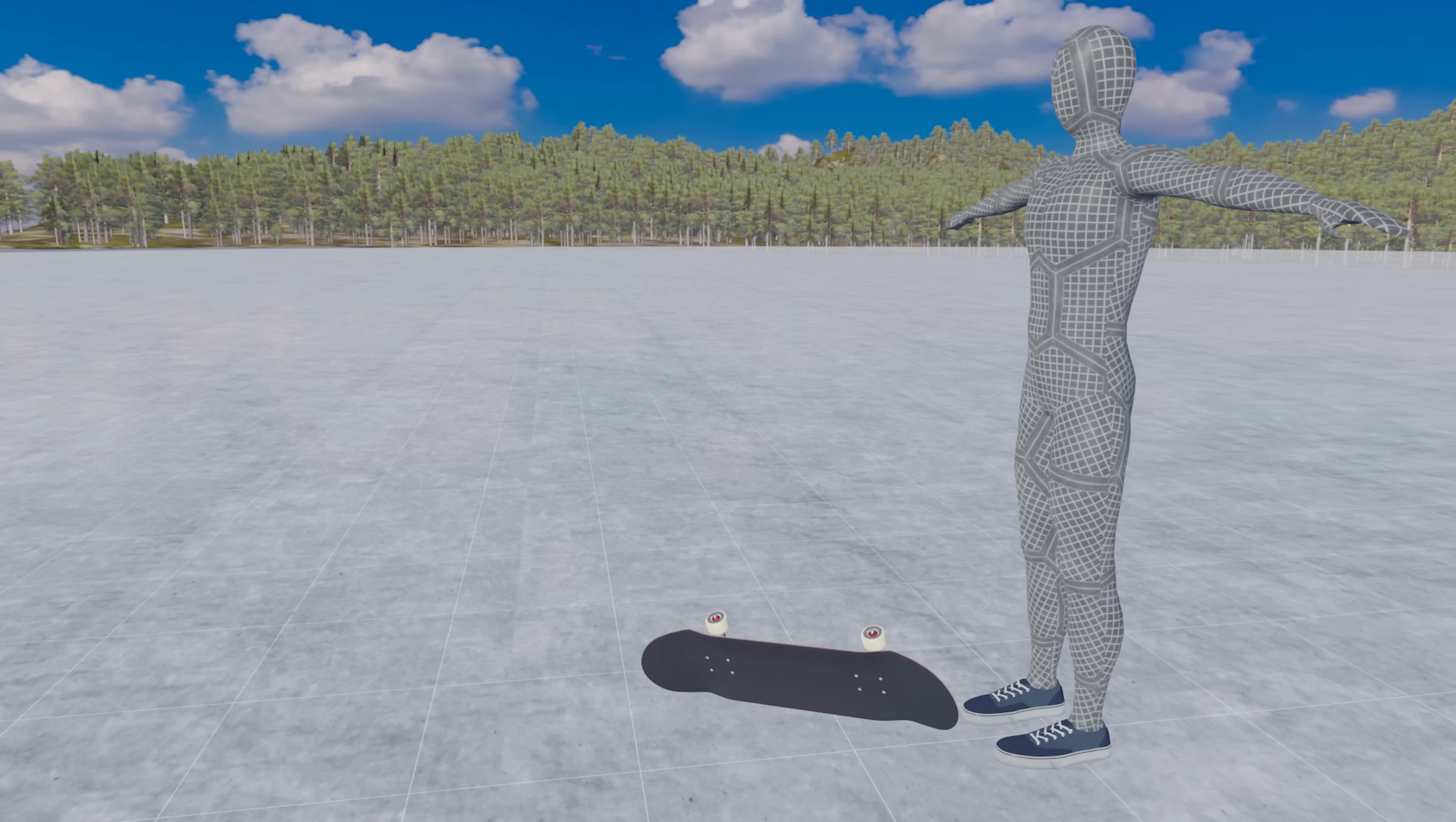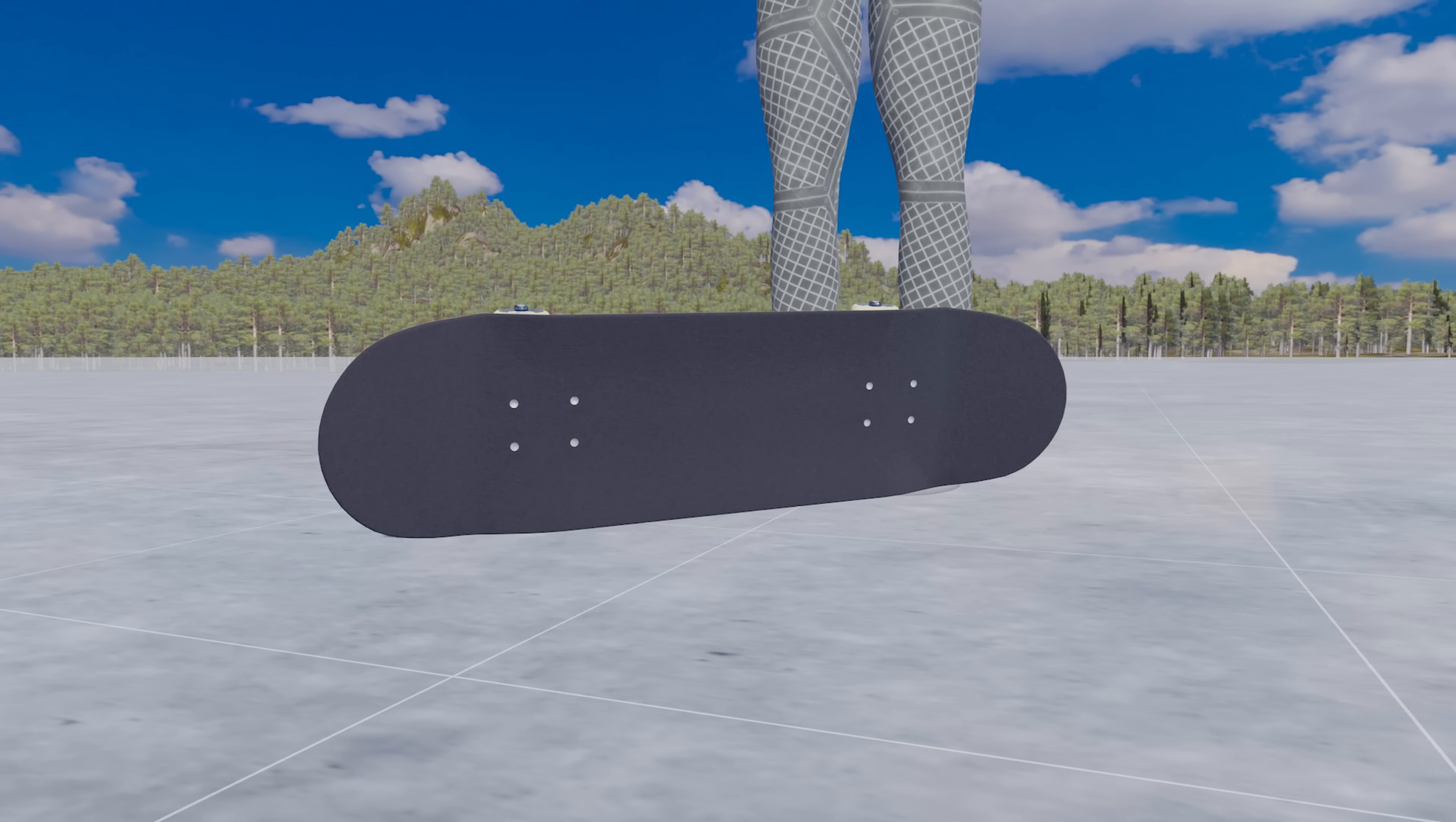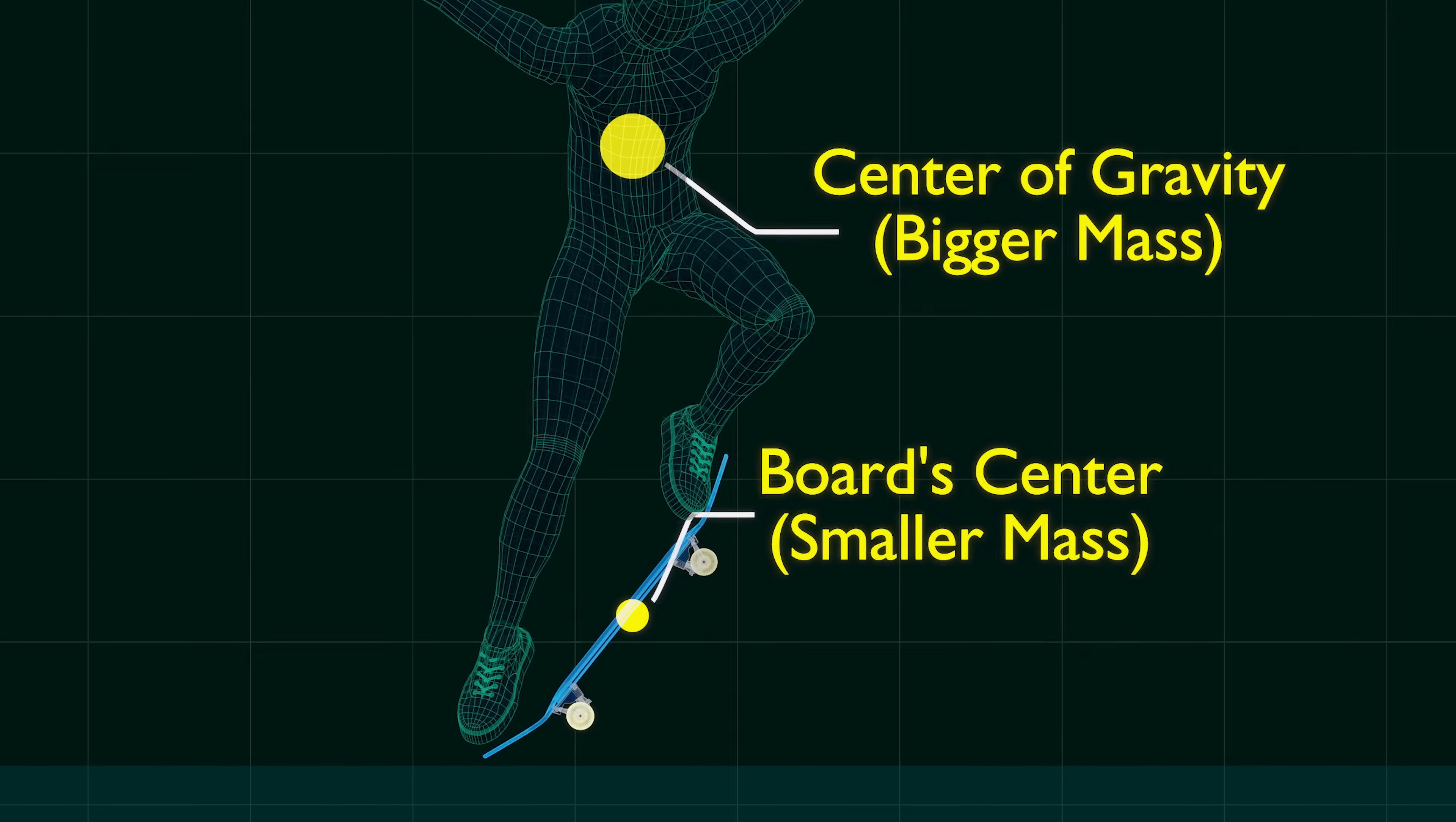Suppose the board hits you, you will not move at all, right? The mass of the board is too light to move your weight.